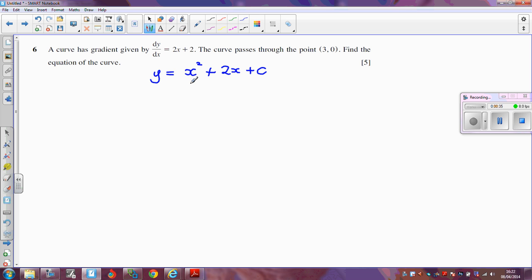Now this is the equation of the curve, but we need to find out what c is. We know, however, that the curve goes through the point (3, 0). So what I'm going to do is substitute that (3, 0) into the equation of the curve.